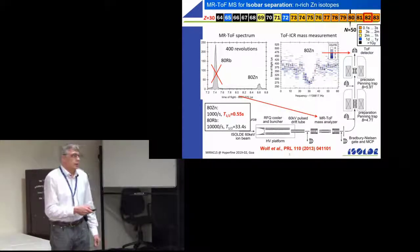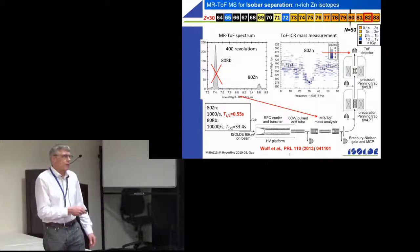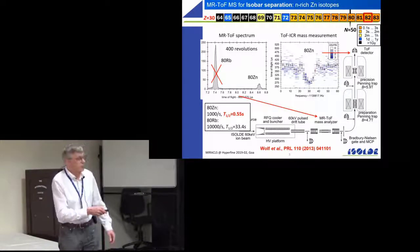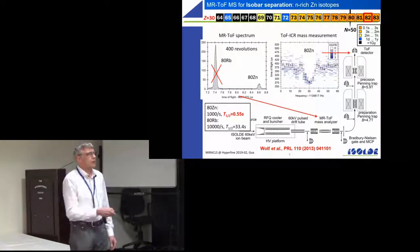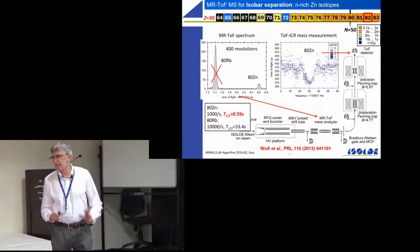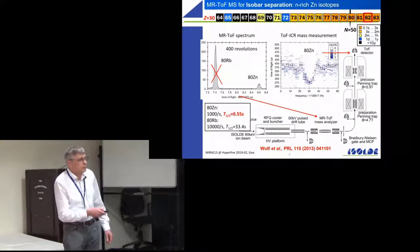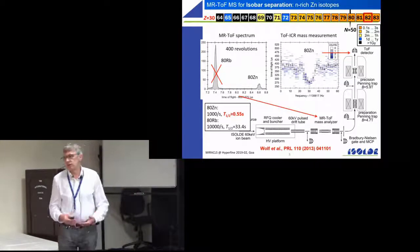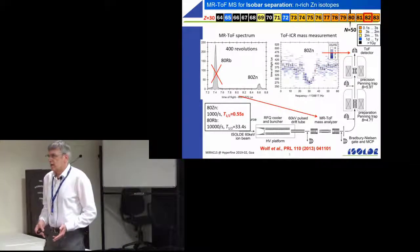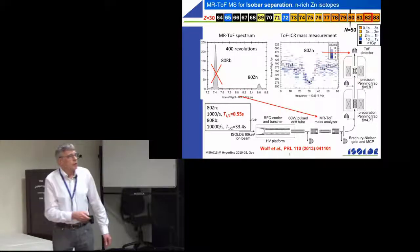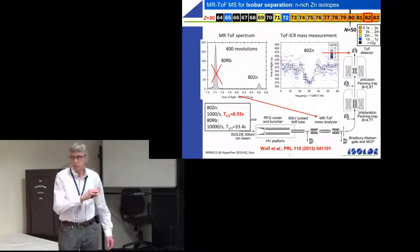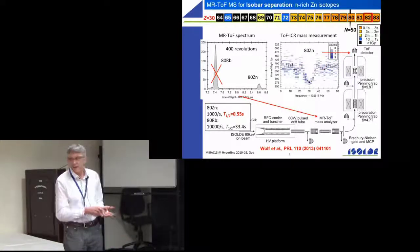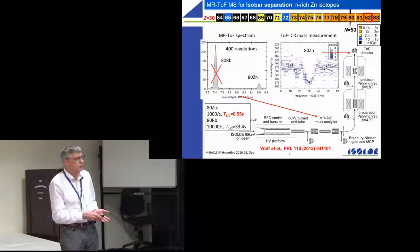We have a radio frequency trap for collecting and bunching. This is a continuous beam coming from ISOLDE. All the rest is a pulsed experiment. Then we go through this instrument that I just explained and then there are Penning traps where you can do cyclotron resonance measurements and then you can be even more precise. So that's what we do when we want to get more precise, and then we do this just as a separator, the multi-reflection.